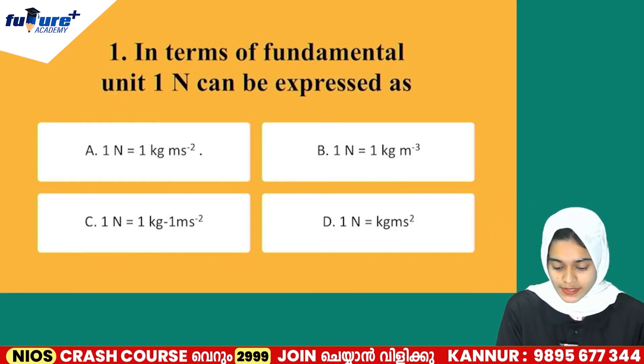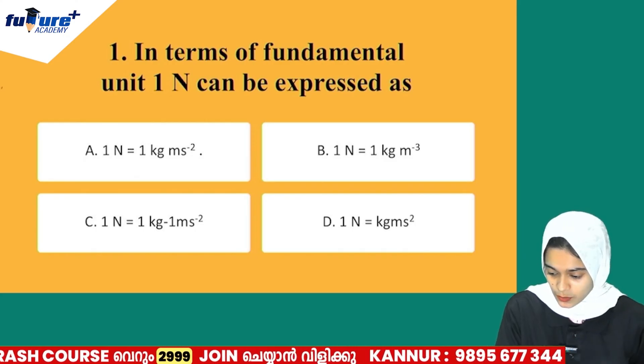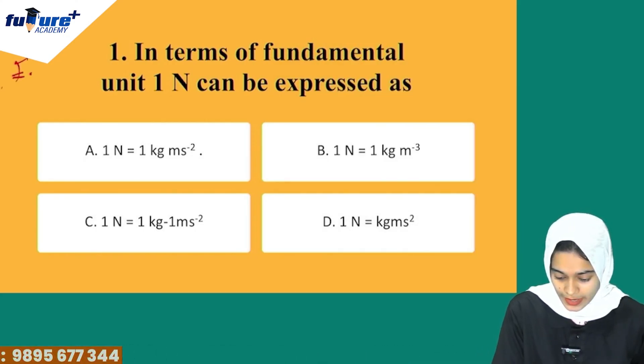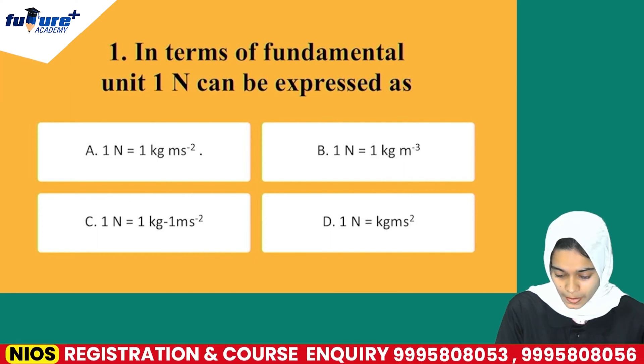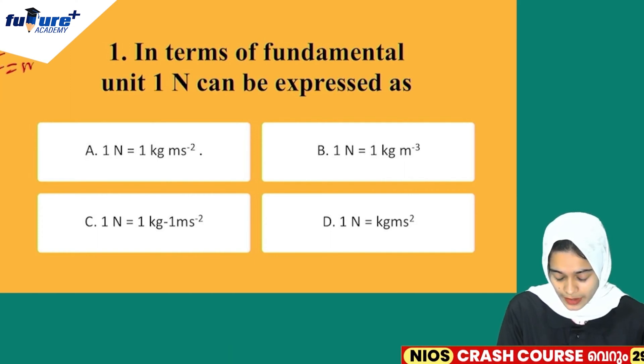That means F is equal to ma. So 1N equals 1 kg·m/s², which is Option A, the correct answer.